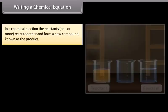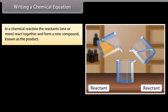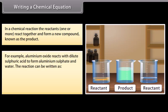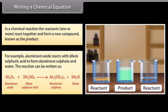Writing a chemical equation. In a chemical reaction, one or more reactants react together and form a new compound known as the product. For example, aluminum oxide reacts with dilute sulfuric acid to form aluminum sulfate and water. The reaction can be written as: aluminum oxide plus dilute sulfuric acid gives aluminum sulfate and water.